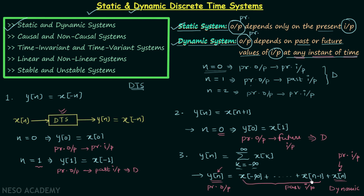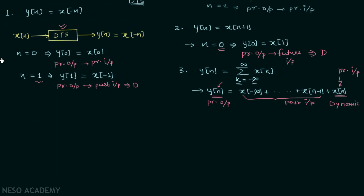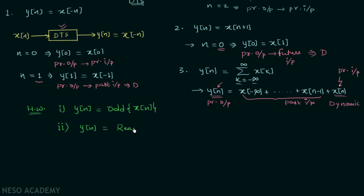It is dynamic because there are many past inputs on which the present output is depending. Now let's move on to the homework problems. In the first problem, the output y[n] is equal to the odd part of input x[n]. You need to tell whether the system is static or dynamic, and once you have the answer post it in the comment section. In the second problem, the output y[n] is equal to the real part of signal x[n]. Again, tell whether the system is static or dynamic and post your answer in the comment section.